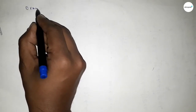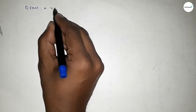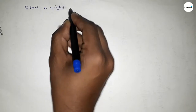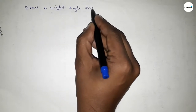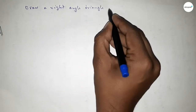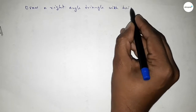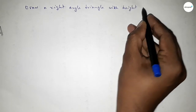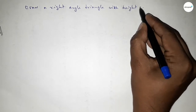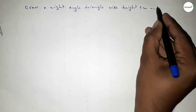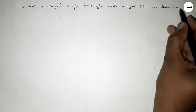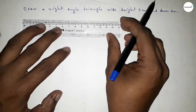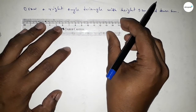Hi everyone, welcome to SI Share Classes. Today in this video we have to draw a right angle triangle with height equal to 5 centimeters and base equal to 6 centimeters. So let's start the video.